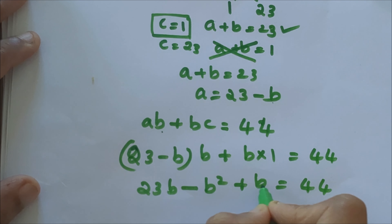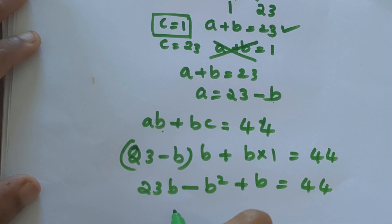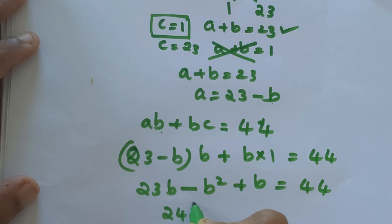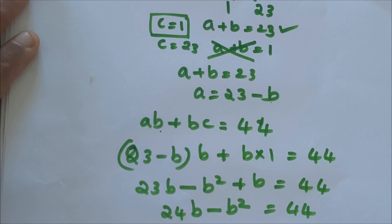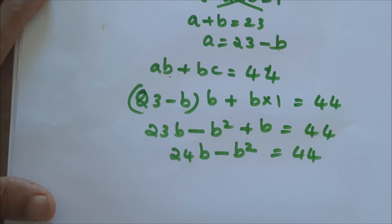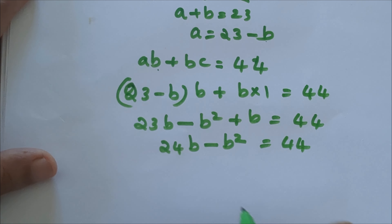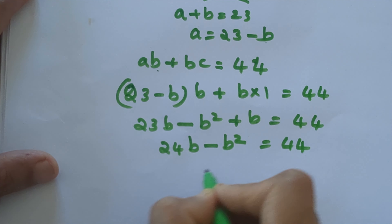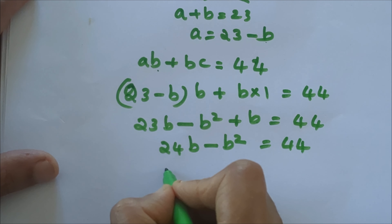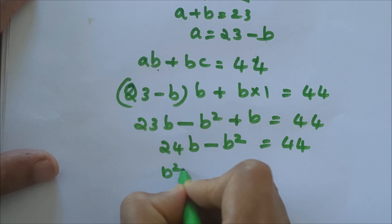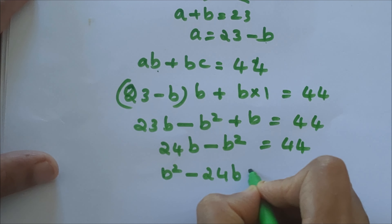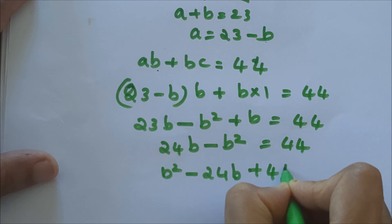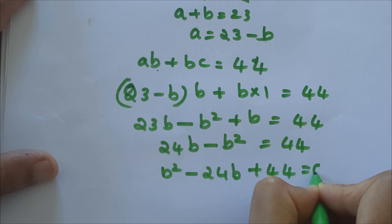Multiplying out: 23b minus b squared plus b equals 44. So 23b plus b is 24b, giving us 24b minus b squared equals 44. Rearranging all terms, we get b squared minus 24b plus 44 equals 0.